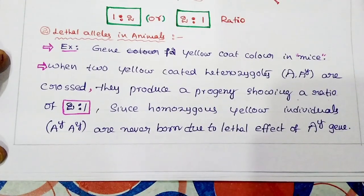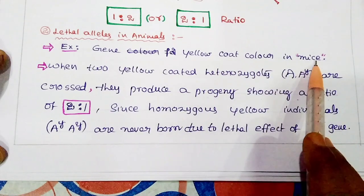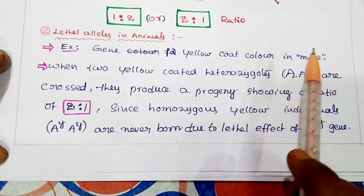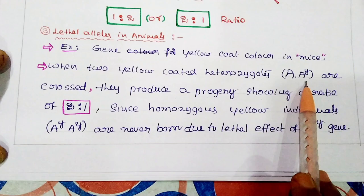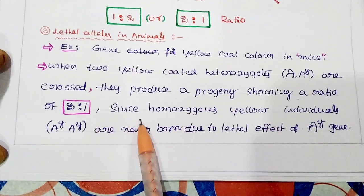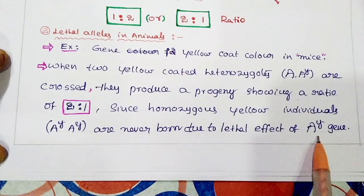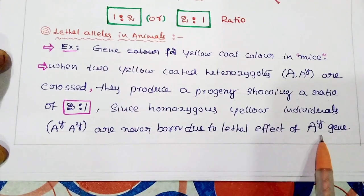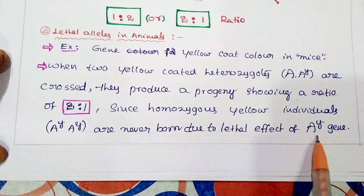Next, lethal alleles in animals. The gene for yellow coat color in mice is the best example for lethal alleles. When two yellow-coated heterozygotes (capital A^Y) are crossed, they produce progeny showing a 2:1 ratio, since homozygous yellow individuals are never born due to the lethal effect of the capital A^Y gene. Capital A^Y is a recessive lethal gene.